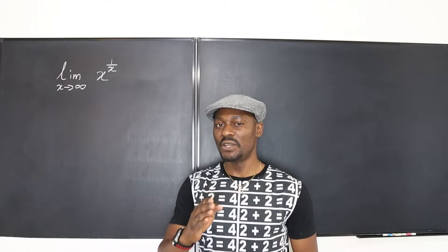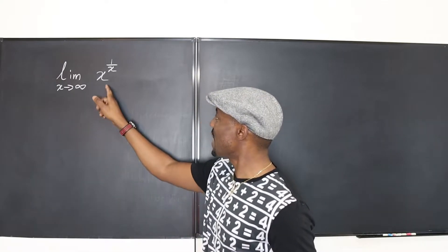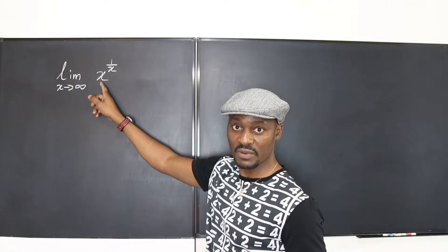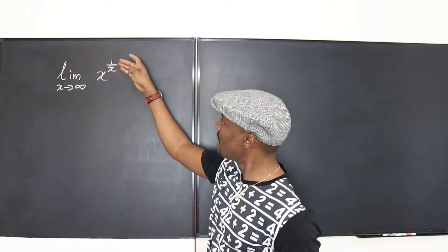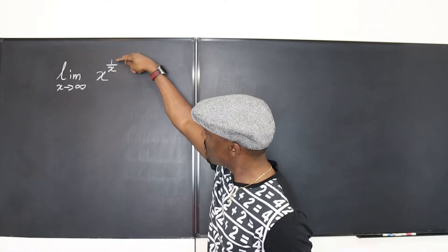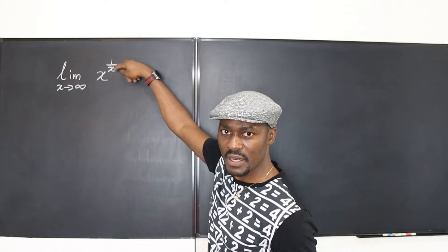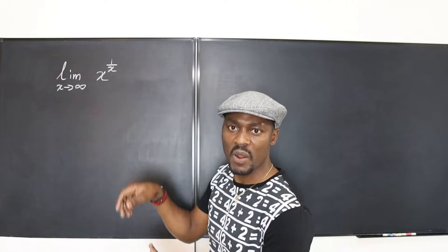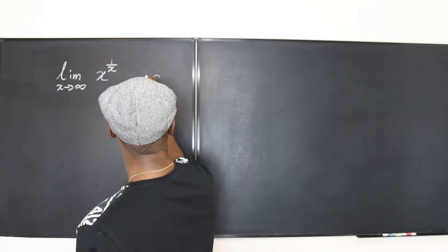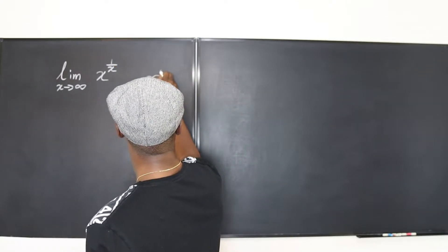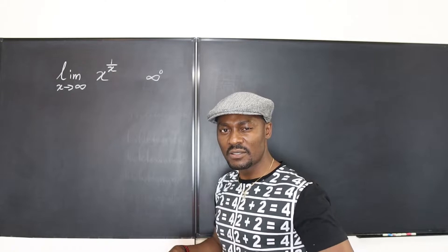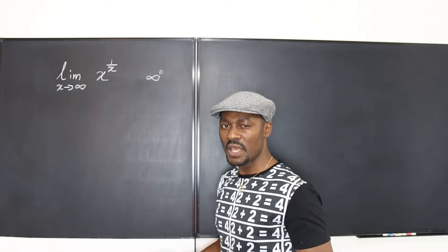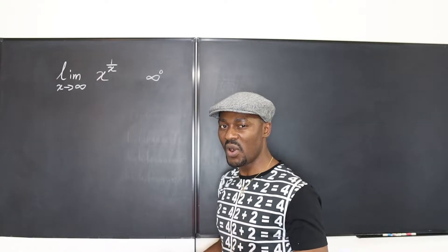Just by observation you will see that as x approaches infinity, this is going to get bigger approaching infinity, and because this is a constant getting bigger and bigger this is going to be more like infinity raised to power 0. You would say anything raised to power 0 is 1, so the answer should be 1.